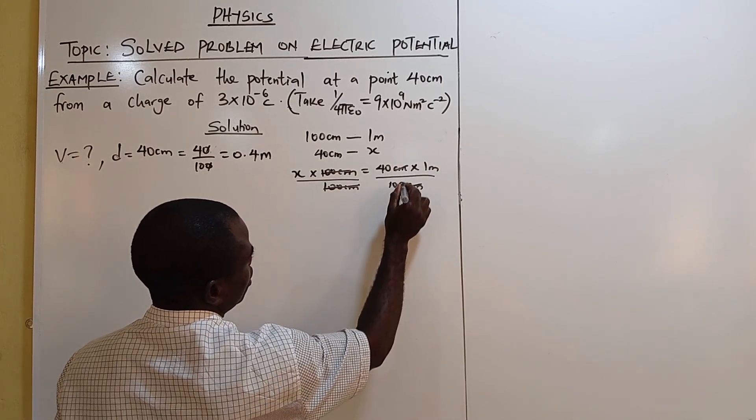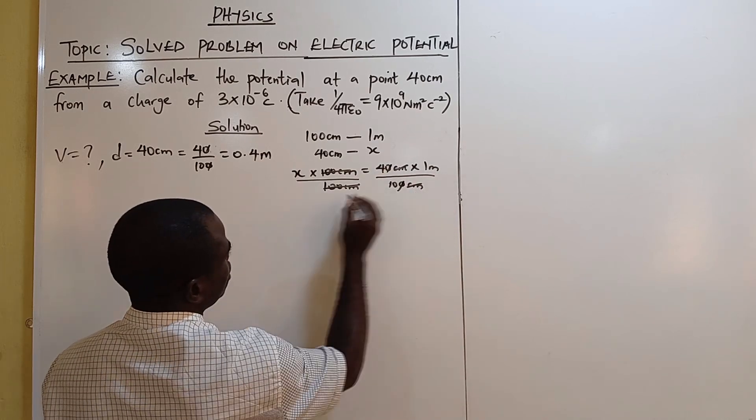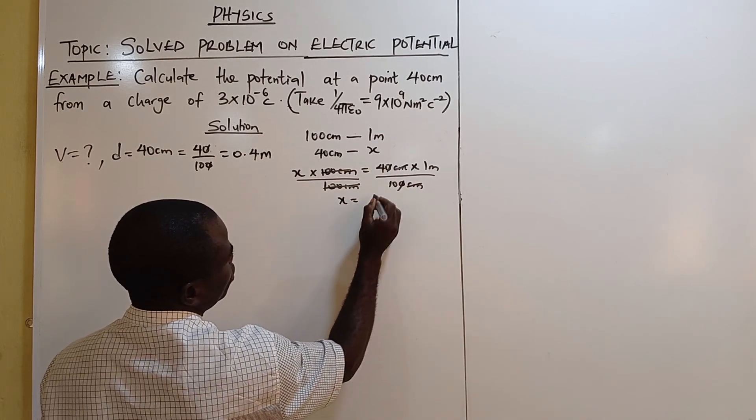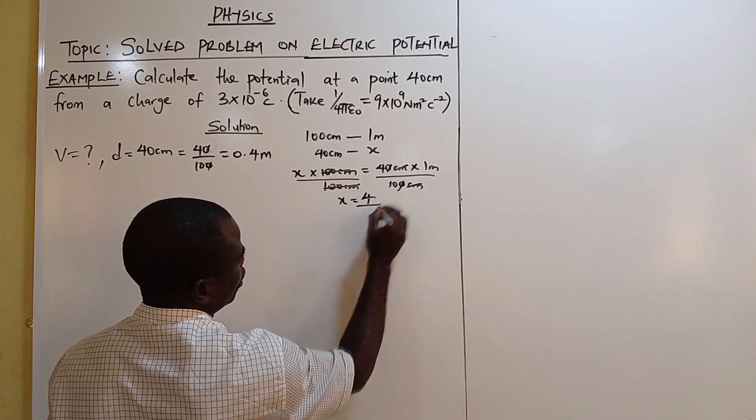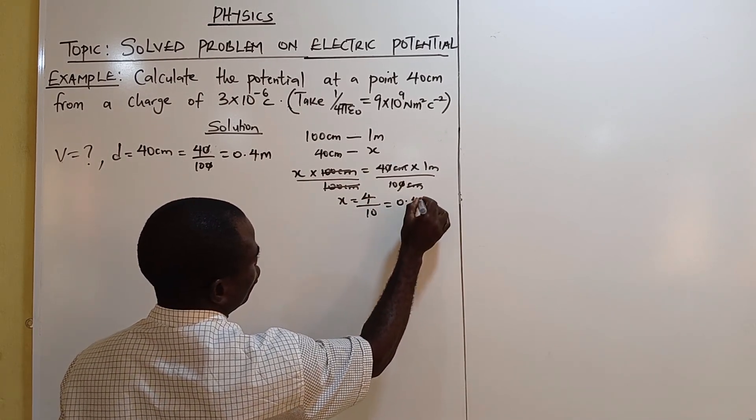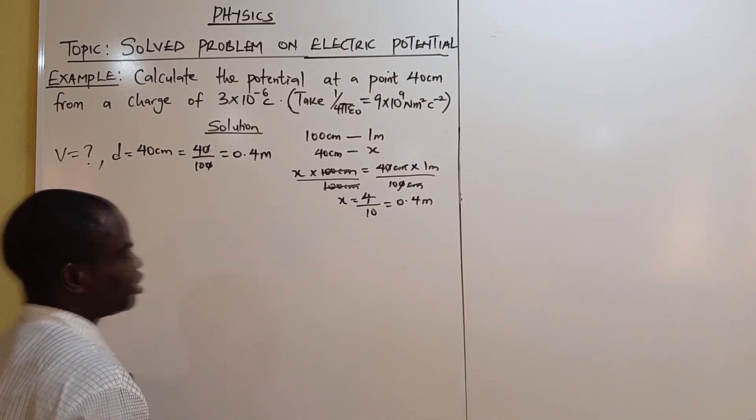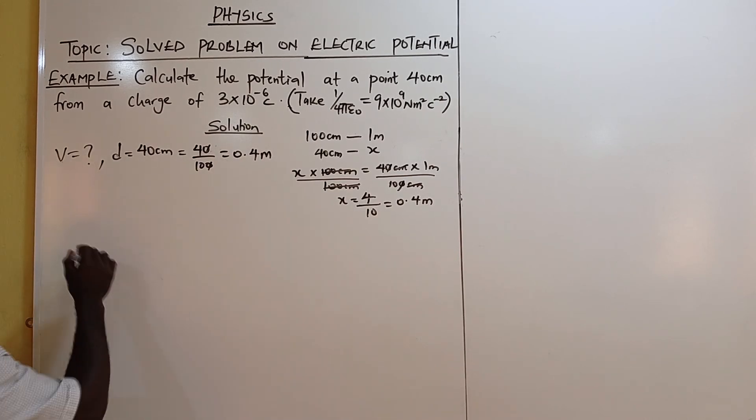100 centimeters. Centimeter cancels centimeter, zero cancels zero. We are left with meters. X equals 4 times 1 plus 4 divided by 10, which is 0.4 meters. That's how we got our 0.4 meters.